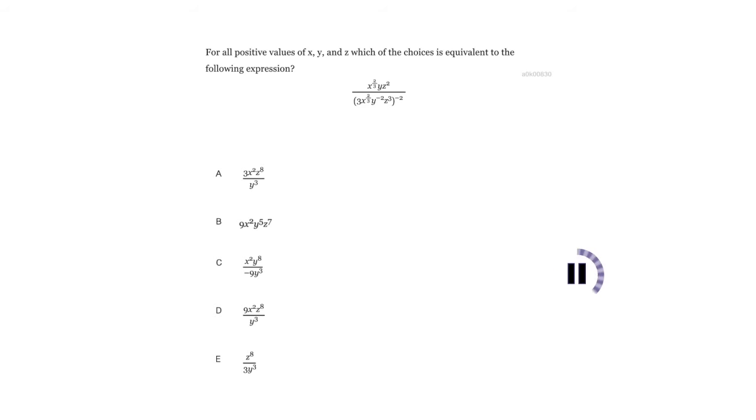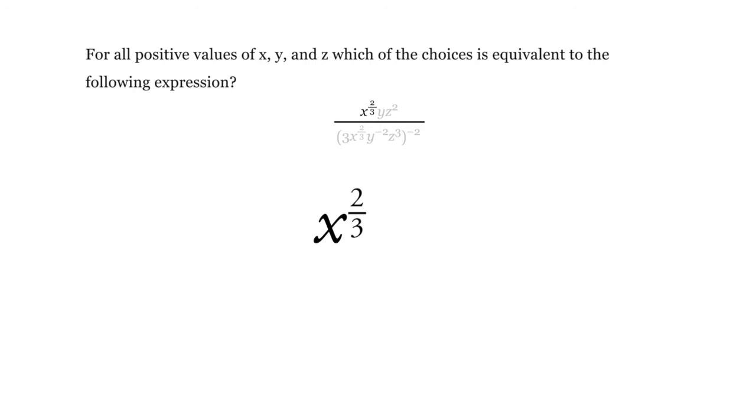Press pause and answer the question. So this one's a big hot mess. We have this numerator of x to the 2 thirds times y times z squared, and we have a denominator of 3x to the 2 thirds, y to the negative 2 and z cubed.